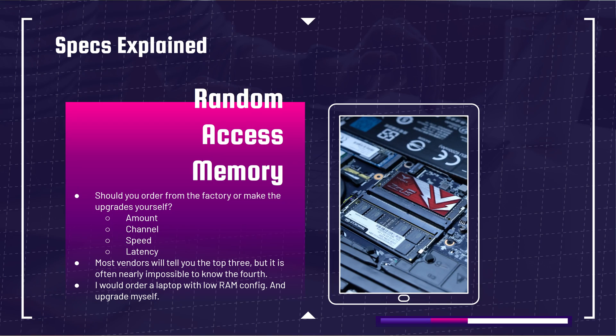The question is: do you order from the factory a computer already upgraded, or do you buy the computer and then upgrade it yourself? The four things that matter when considering RAM are: the amount, channel (single versus dual), speed (the megahertz), and latency — which is usually classified as CAS or CL. Most vendors will tell you the first three — the amount, channel, and megahertz — however, they often leave out the latency, which is an important part of the equation.